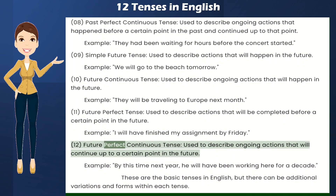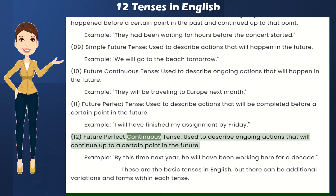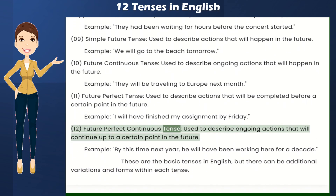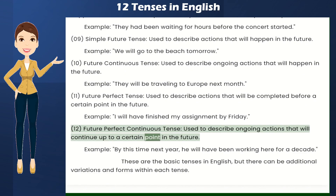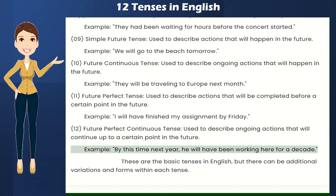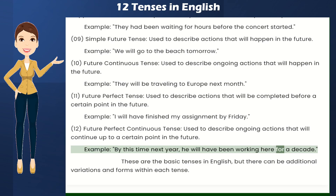Future Perfect Continuous Tense — used to describe ongoing actions that will continue up to a certain point in the future. Example: By this time next year, he will have been working here for a decade.